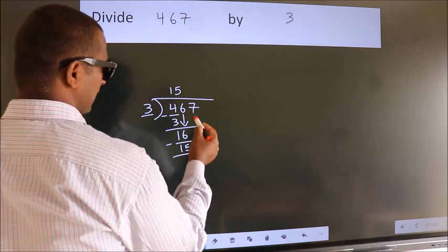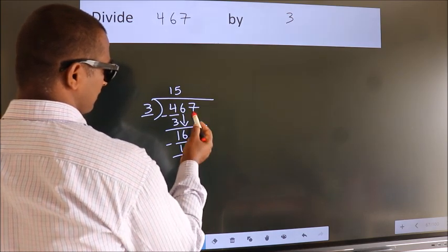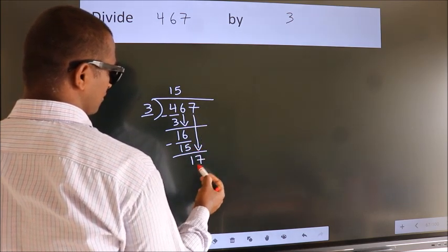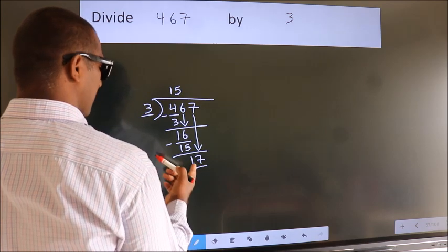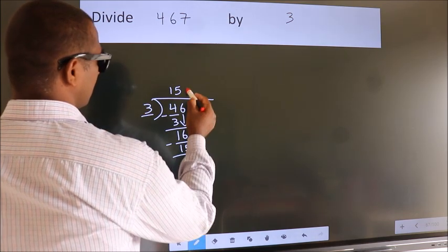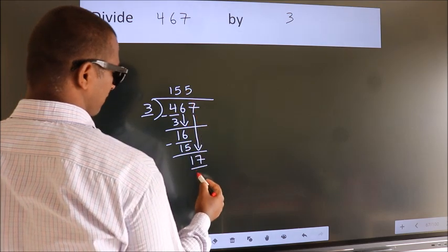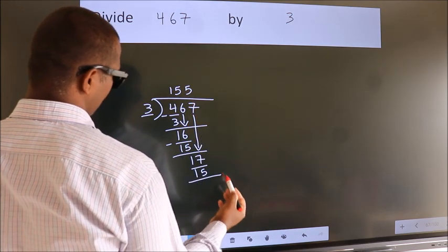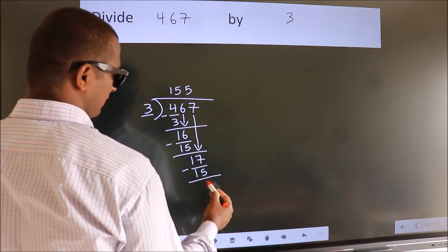After this, bring down the next number. So, 7 down. So, 17. A number close to 17 in 3 table is 3 fives 15. Now, we subtract. We get 2.